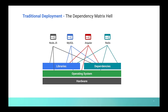Each software or application will have its own libraries and dependencies. Sometimes there might be conflicts — some applications need libraries specific to certain versions, while other applications need a different version of the same library. This is the dependency matrix hell, where you are unable to easily upgrade or maintain these applications.